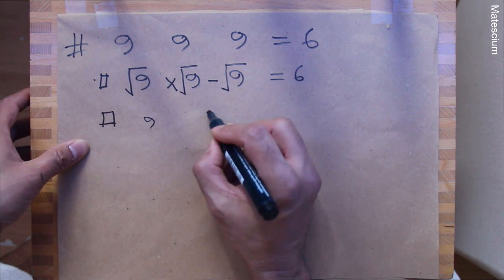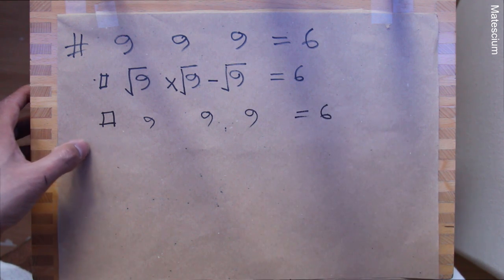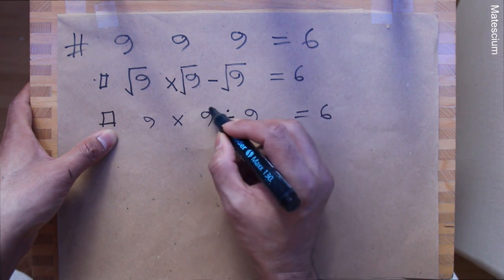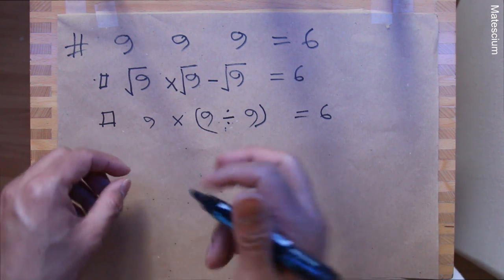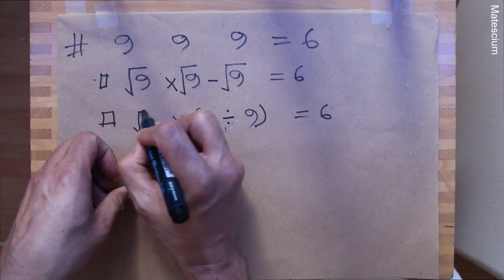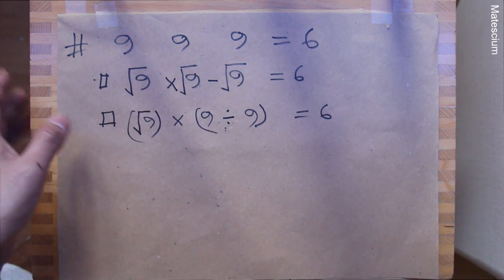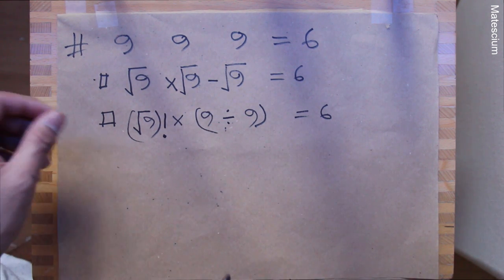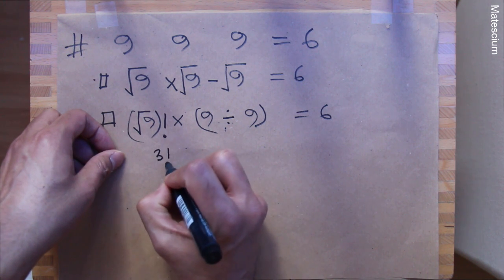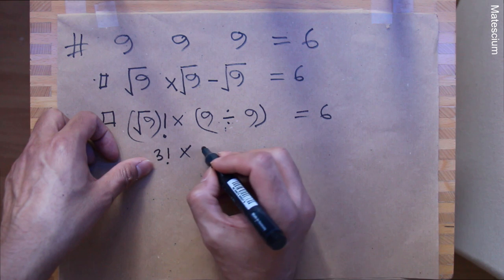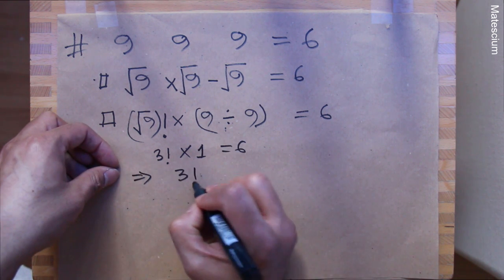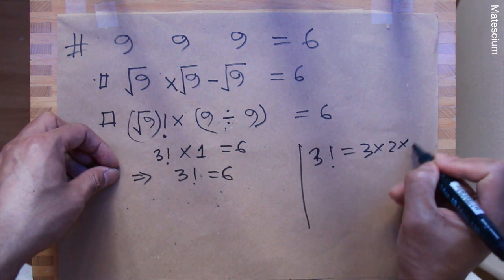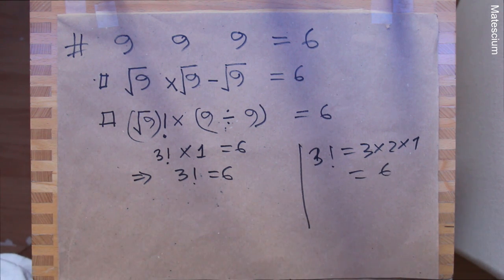Second possible solution for nine: I introduce a multiplication sign and a division sign — that's not enough to make the left-hand side six. I introduce a square root here, but that's still not six. So I introduce a factorial sign. Square root of nine equals three, so factorial three times nine over nine equals one, giving factorial three equals six. We know factorial three equals three times two times one equals six. Left-hand side and right-hand side are both equal to six.